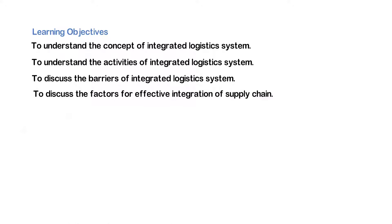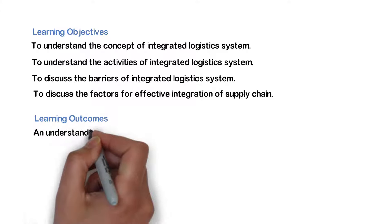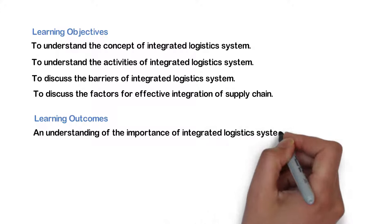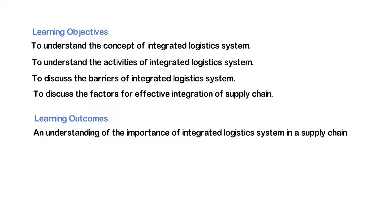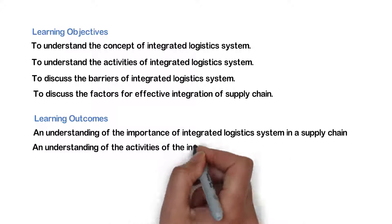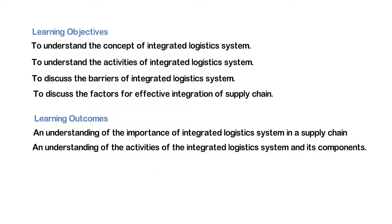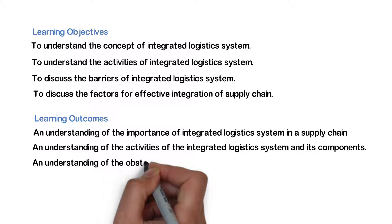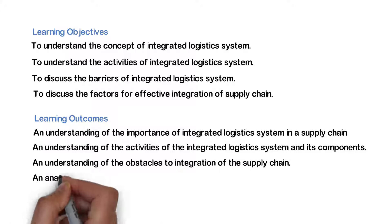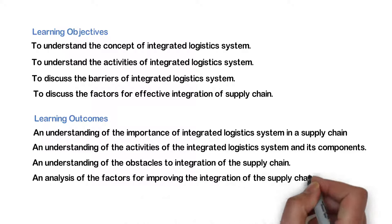The learning outcomes of this module are an understanding of the importance of integrated logistics system in a supply chain, an understanding of the activities of the integrated logistics system and its components, an understanding of the obstacles to integration of the supply chain, and an analysis of the factors for improving the integration of the supply chain.